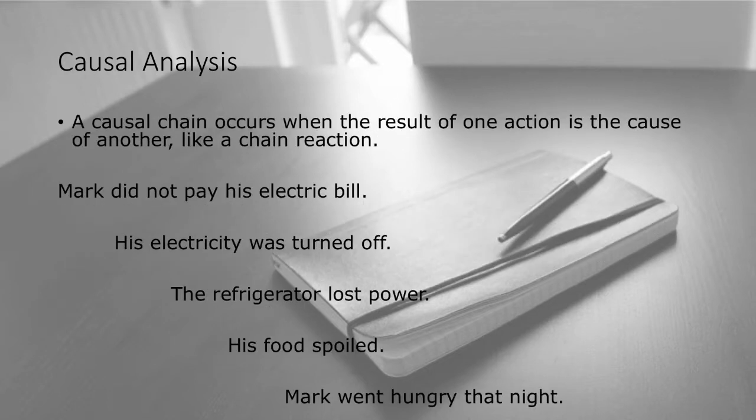A causal chain occurs when the result of one action is the cause of another — think of it like a chain reaction. A causes B, causes C, causes D, and so on. To illustrate this: Mark did not pay his electric bill, so his electricity was turned off. Then the refrigerator lost power, so his food spoiled, and Mark went hungry that night. All of this started by him not paying his electric bill. If anything had been interrupted at any point, the next thing would not have happened.